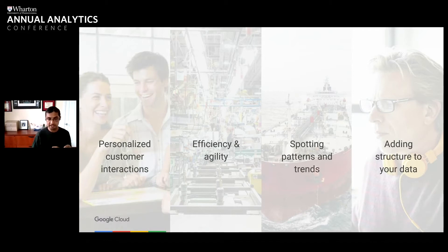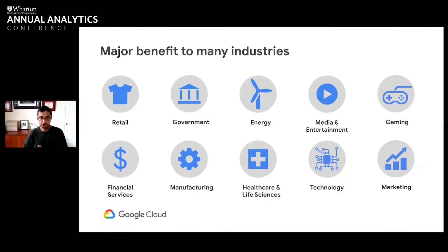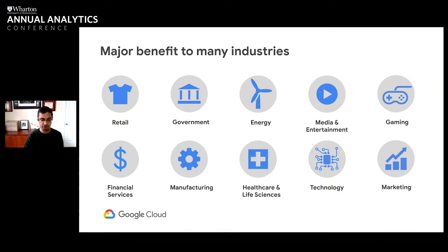This has a lot of benefits to every single industry, but what's interesting is the benefit to each industry is actually quite unique. In retail, we see AI used to help customers discover the right product or to optimize the supply chain. In financial services, it's helping detect financial crimes in a better way. Every industry has their own story of how AI can be used, and we've been really thinking about how you take amazing technology and bring that together with amazing use cases to create value for each of these industries.